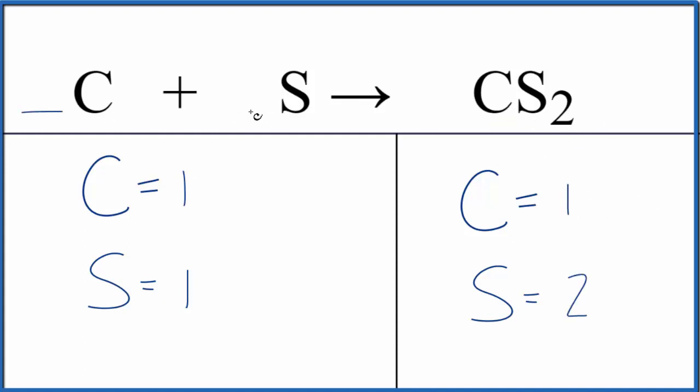So to balance the equation, we can only change the numbers in front, the coefficients. Right now, we assume that they're one, although it's not written. It looks like all we need to do is get two sulfur atoms here and the equation's balanced. So put a two in front of the sulfur. That's one times two. This equation is balanced.